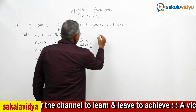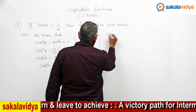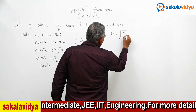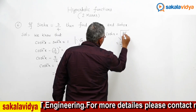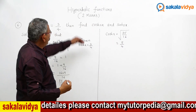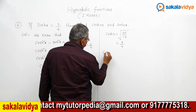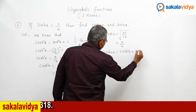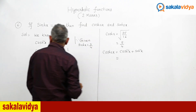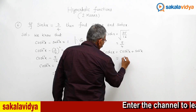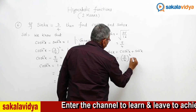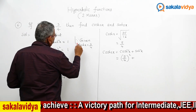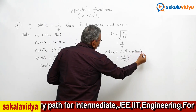So cosh(x) equals the square root of 25 by 16. Square root of 25 is 5, square root of 16 is 4. So cosh(x) equals 5 by 4. Now we know the cosh(x) value, so let us find out cosh(2x) one by one.